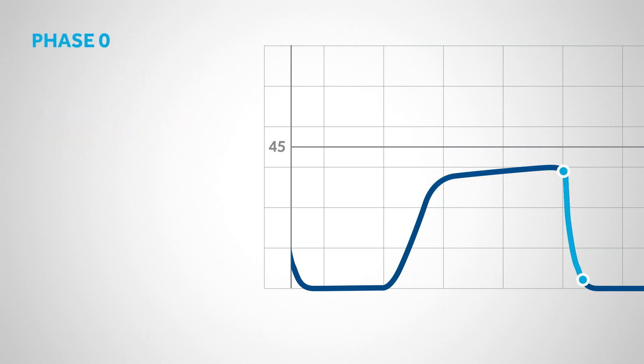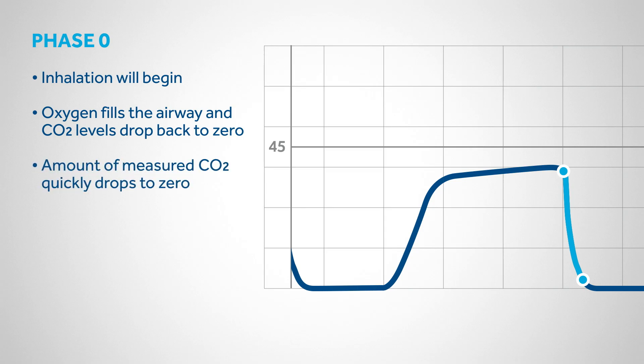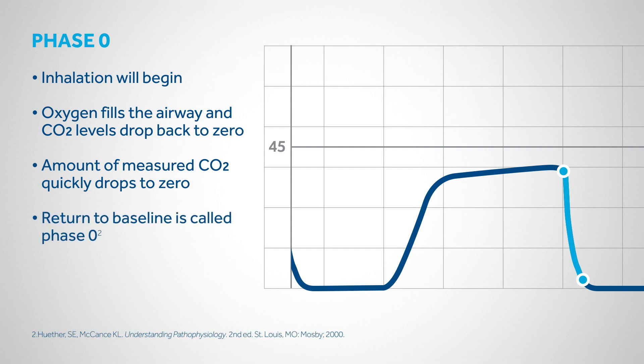At Phase 0, inhalation will begin. Oxygen fills the airway and CO2 levels drop back to zero. This is identified as the rapid descent at the end of the respiratory cycle. When inspiration begins again, the amount of measured CO2 quickly drops to zero. The return to baseline is called Phase 0.